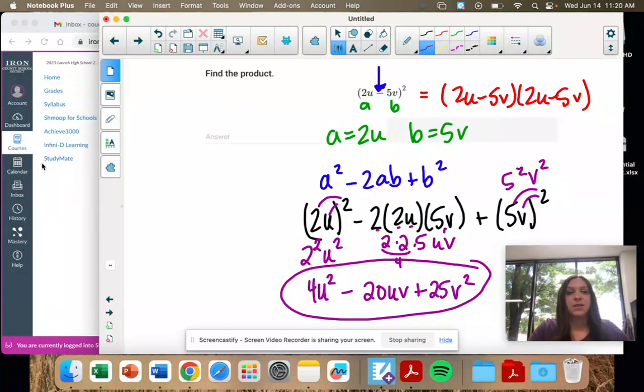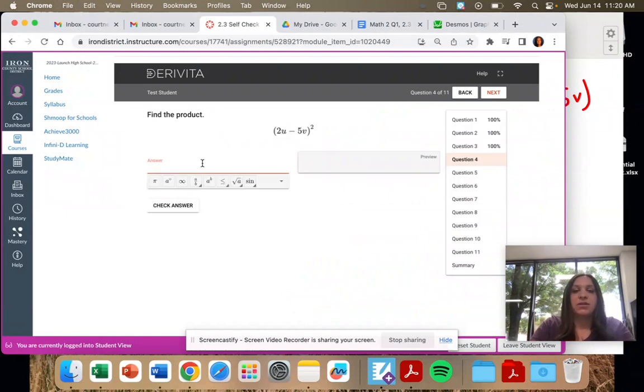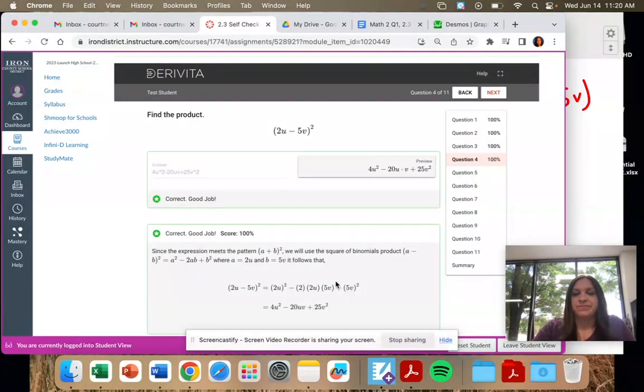You can also get it the other way, but this can be faster. So I'm going to take the first term squared, 4u squared, minus 2 times 2 times 5, which is 20, both variables, plus the last term squared. We got it.